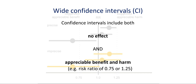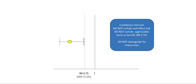Another criterion to consider regarding imprecision: wide confidence intervals lead to downgrading the quality of evidence, and that may be the case if the confidence intervals include both no effect and appreciable benefit and harm — for instance, a risk ratio of 0.75 or 1.25 included in the confidence intervals, indicating still-substantial probabilities of large risk reductions or risk increases. If the confidence intervals of the pooled estimate lie clearly on one side — in this case showing a greater relative risk reduction than 25% including the confidence limits — then one would not downgrade for imprecision.